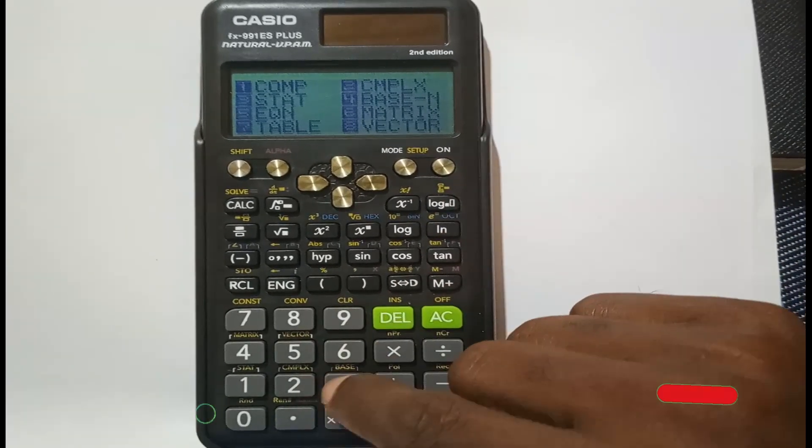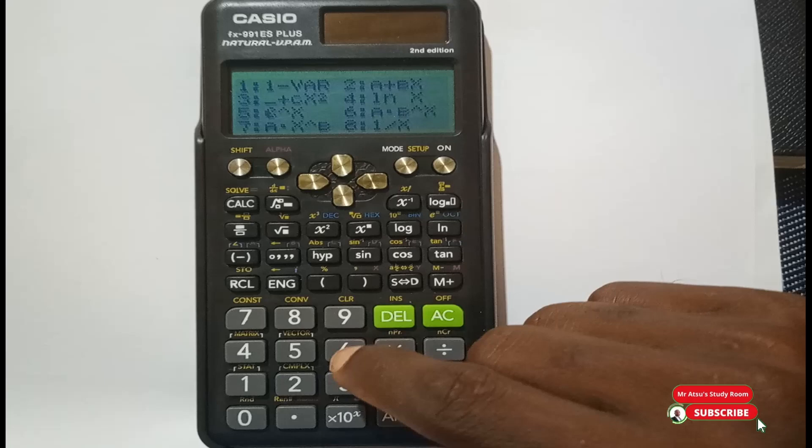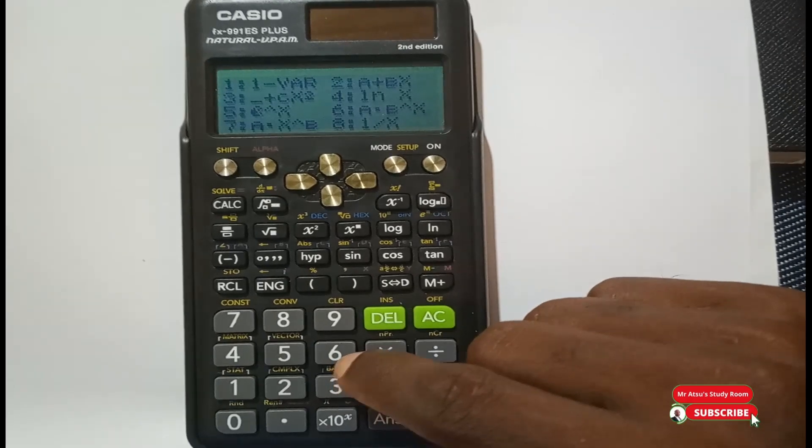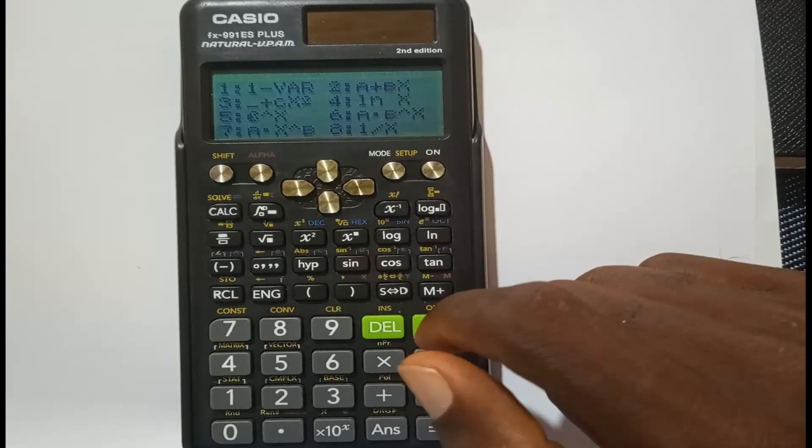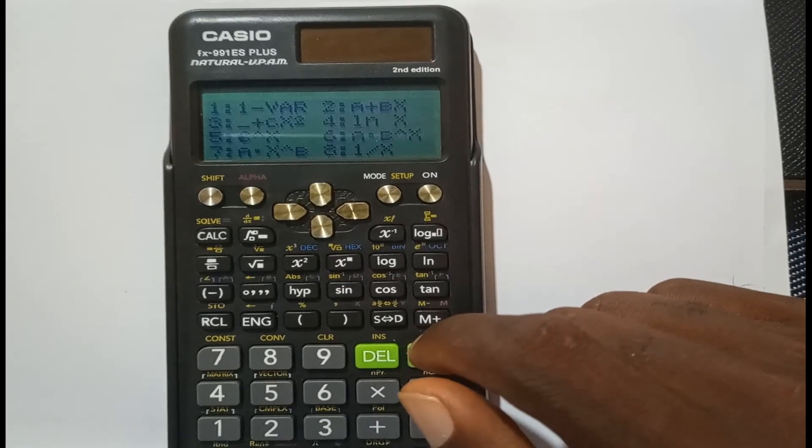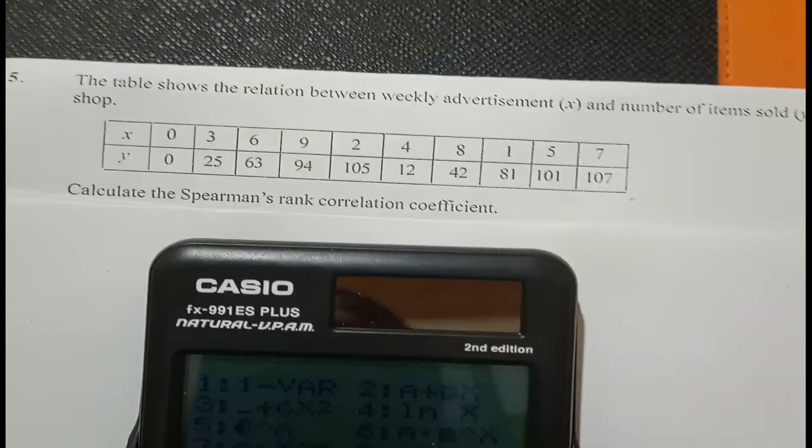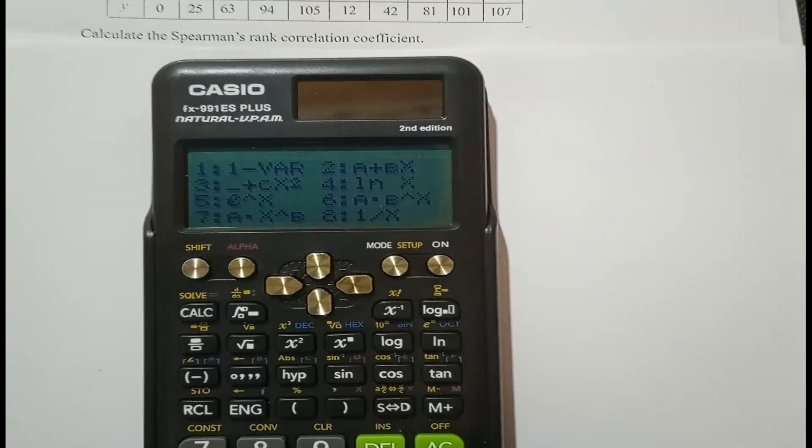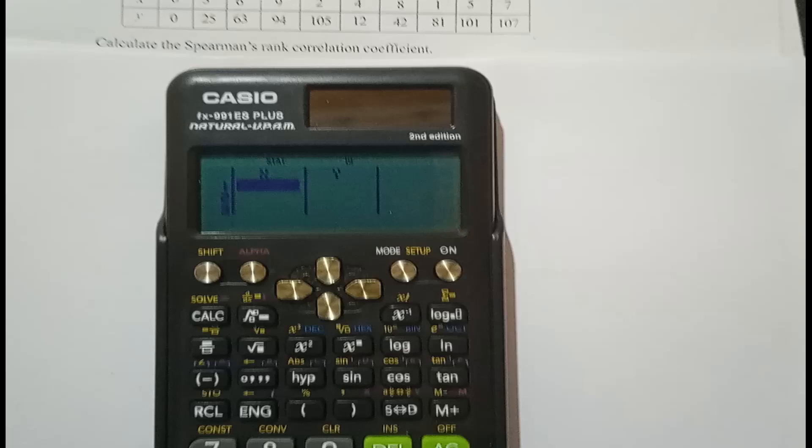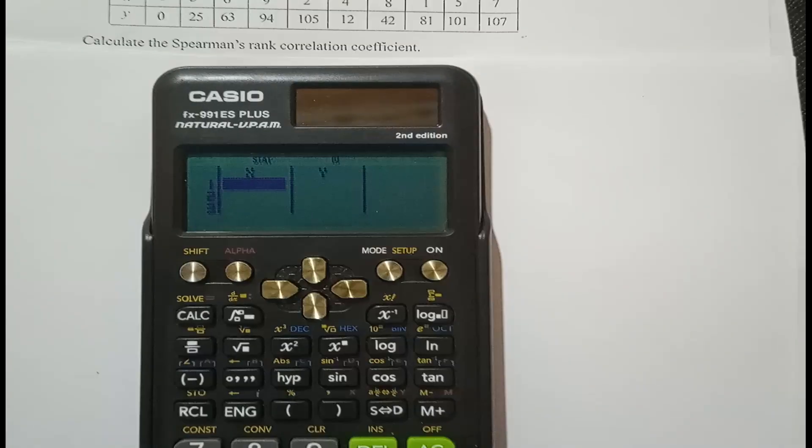The first option is one variable, the second one is A plus BX which stands for two variables. We want two variables since the table has two variables x and y, so enter 2. You can see the x and the y in the table there.